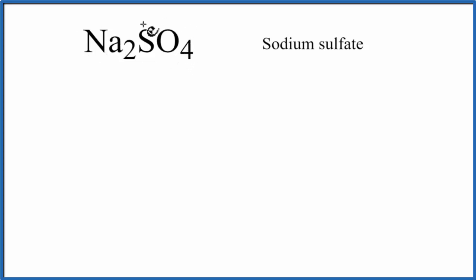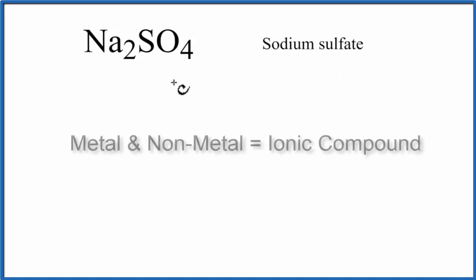We have a metal bonded to a group of nonmetals. SO4 is a polyatomic ion called the sulfate ion. So we have our metal bonded to our nonmetals - that's an ionic compound.